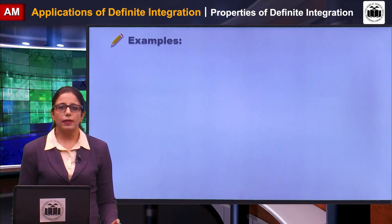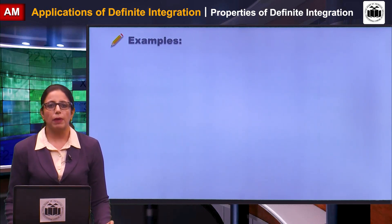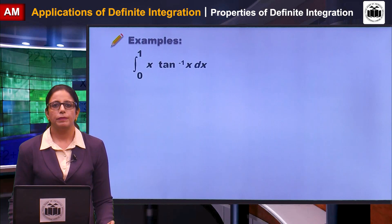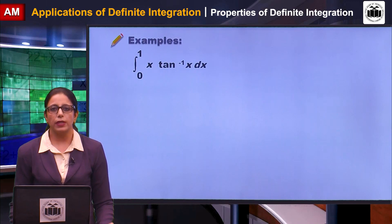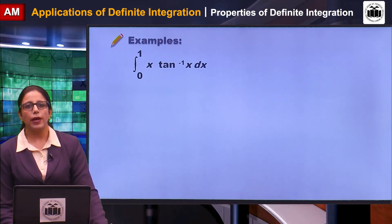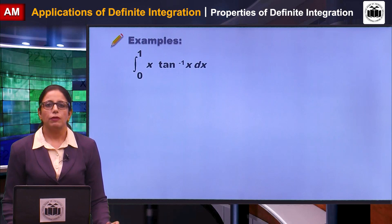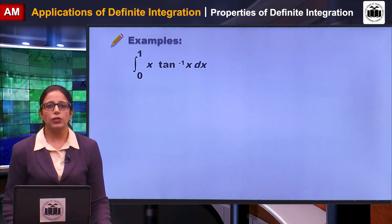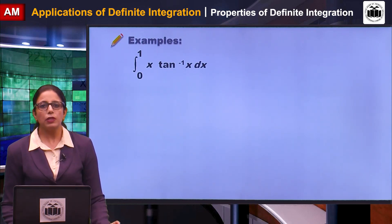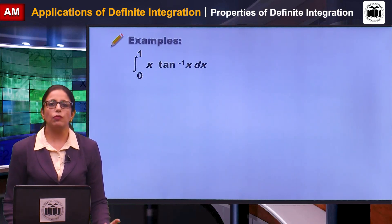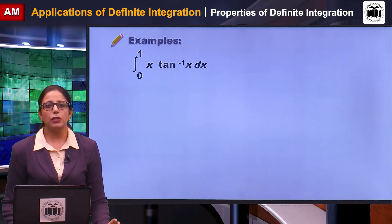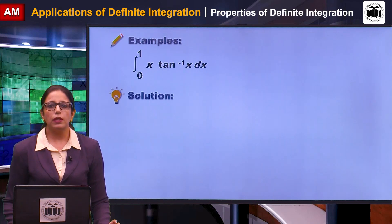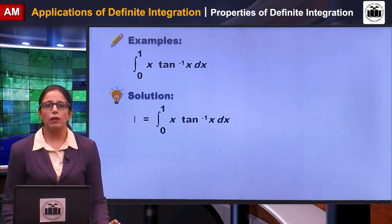Let us see another example using integration by parts: integration from 0 to 1 of x·tan⁻¹x dx. First, let us identify the types of functions. x is an algebraic function and tan⁻¹x is an inverse function. As per the LIATE rule, u = tan⁻¹x and v = x.